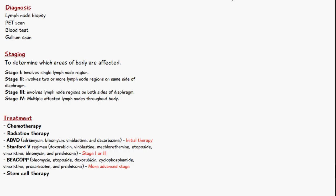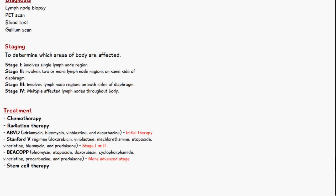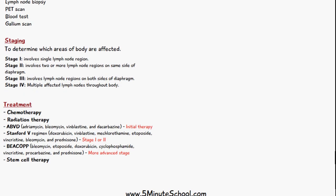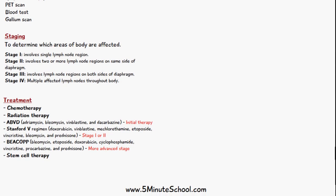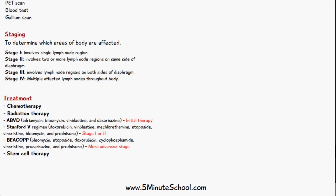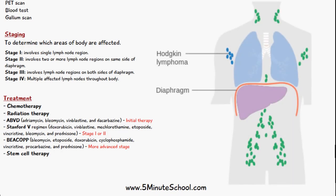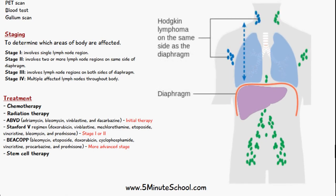All Hodgkin's lymphomas and non-Hodgkin's lymphomas are staged to determine which areas of the body are affected. Stage 1 involves a single lymph node region. Stage 2 involves two or more lymph node regions on the same side of the diaphragm.